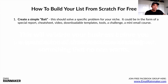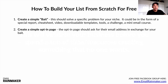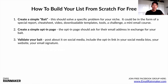Here are the mechanics. Step one: create a simple bait that solves a specific problem for your niche. It could be a special report, cheat sheet, video, downloadable template, tool, challenge, or mini email course. Step two: create a simple opt-in page that asks for their email address in exchange for the bait. Step three: validate your bait by getting 50 subscribers — not friends or family, but strangers. You can post about it on social media, include the opt-in link in your bios, put it on your website, or use it in your email signature.